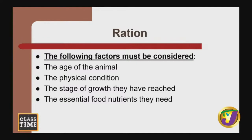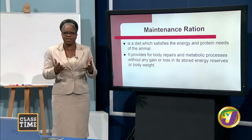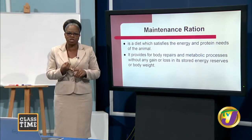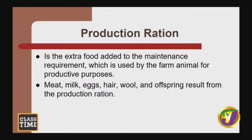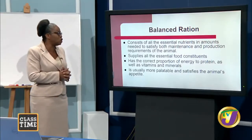For younger animals, they need more protein in their ration than older animals. There are three types of ration: the maintenance ration, the production ration, and the balanced ration. The maintenance ration is a diet which satisfies the energy and protein needs of the animal, providing for body repairs and metabolic processes without any gain or loss in stored energy reserves or body weight. The production ration is the extra food added to the maintenance requirement, used by the farm animal for productive purposes such as meat, milk, eggs, hair, wool, and offspring.